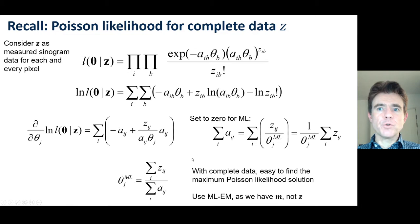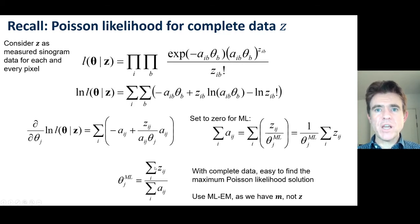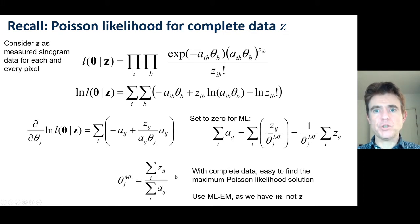In reality, we do not have complete data, so we use the expectation maximisation method. Instead, we put in a conditional expectation of the complete data Z, because we don't actually have it. We derive that conditional expectation of Z based on knowledge of M.